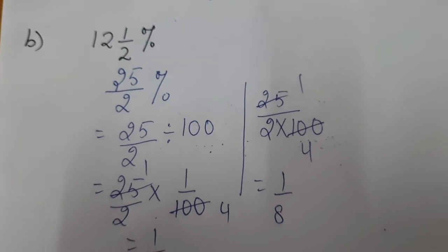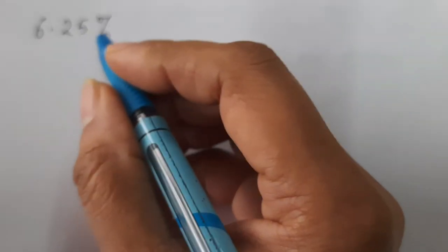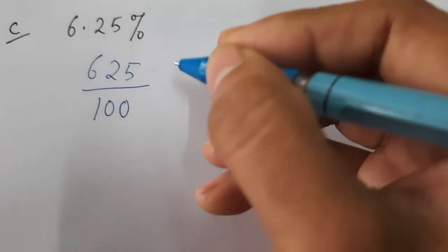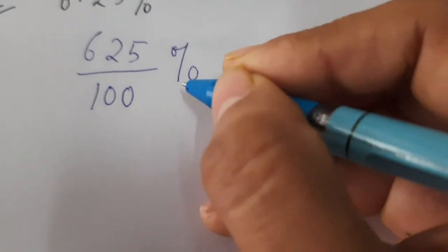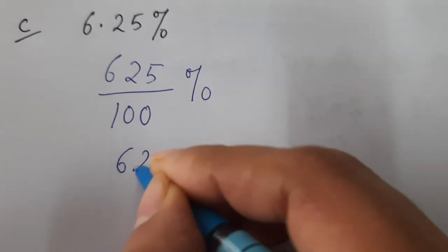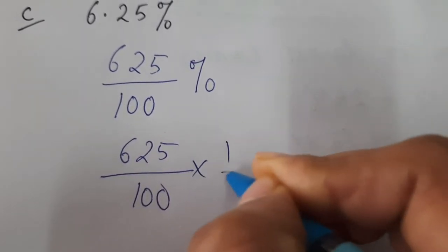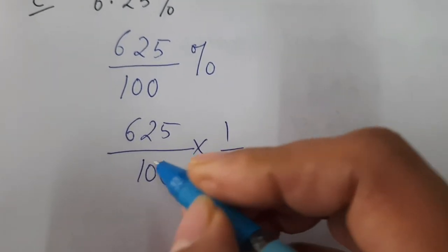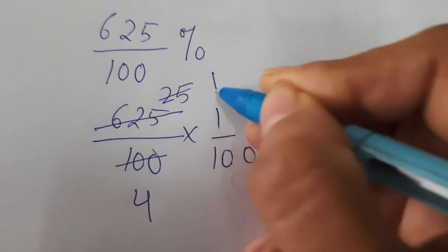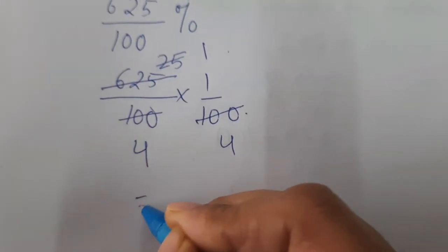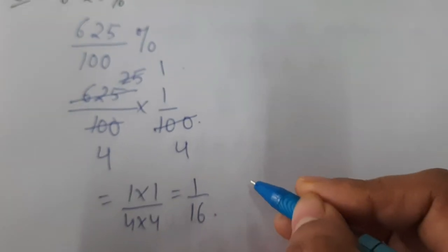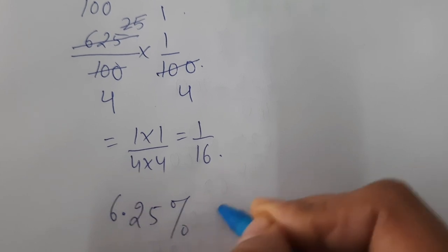Now let's start part C. Part C is 6.25 percent. We have to convert this decimal percentage to a fraction in lowest terms. 6.25 percent means 6.25 upon 100. To remove the percent sign, we multiply by 1 upon 100, giving 625 upon 10000. Simplifying: 25 divides into 625 twenty-five times, and 25 divides into 100 four times; then 1 times 1 is 1 and 4 times 4 is 16, so the result is 1 upon 16.